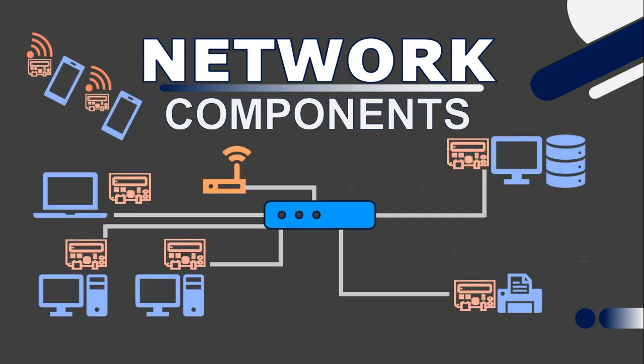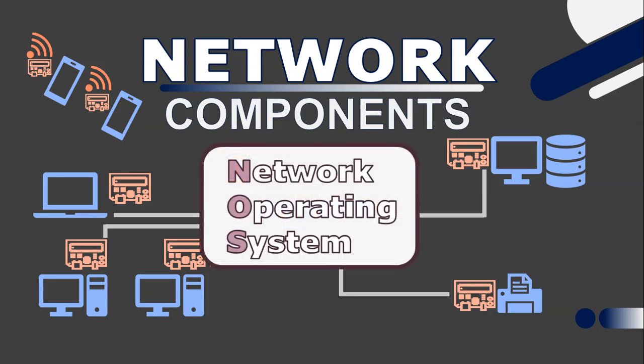Those are the main hardware components used in a network. But is there any software involved? Yes, there is — and that is the NOS. Not referring to some prop from a Fast and Furious movie, but the network operating system. The network operating system is software that allows you to manage and administer network resources and services such as file sharing, the different types of users and their profiles, and the security and communication protocols.